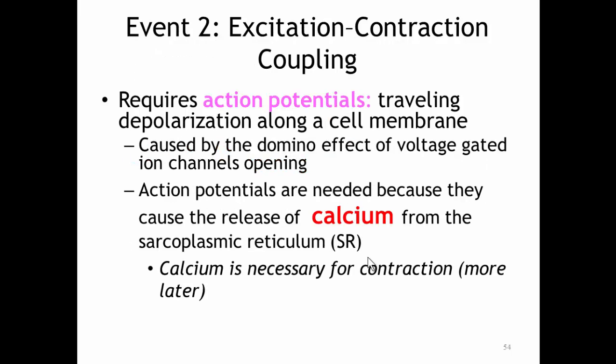Excitation-contraction coupling requires action potentials — that's why we bothered to do the first five steps. Action potentials are the traveling depolarizations along a cell membrane, caused by that domino effect of the voltage-gated ion channels opening. Action potentials are needed because they cause the release of calcium from the sarcoplasmic reticulum. The sarcoplasmic reticulum is a modified form of the endoplasmic reticulum, and it stores calcium. Calcium is absolutely necessary for contraction.